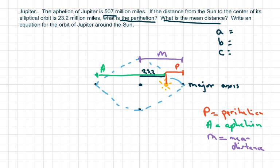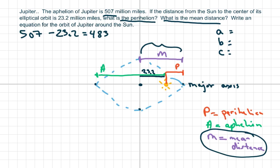Let's do the mean distance first. We're looking for the mean distance here. That is 507, and just remember it's millions of miles, so you have 507 minus 23.2, which gives us 483.8 million miles. That equals 483.8 million miles.